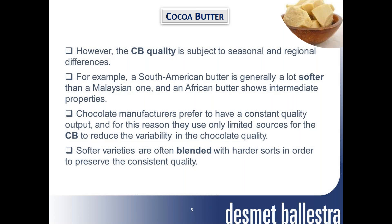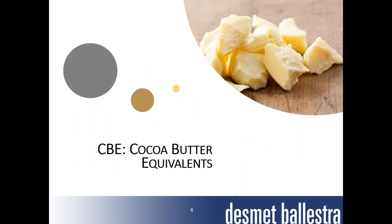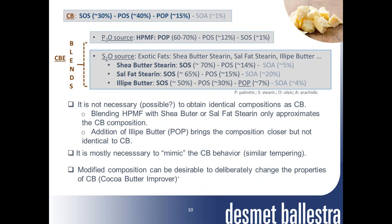Guillermo Abad asks if you have the triacylglycerol composition of mango kernel fat. I don't have those compositions here, but you can easily find them on the internet. They are all products rich in SOS and POS — that's why they are used as cacao butter equivalents. The most commonly used exotic fats are, in principle, shea butter sterin, sal fat sterin, and illipe butter.